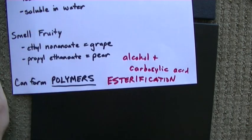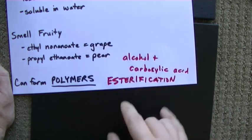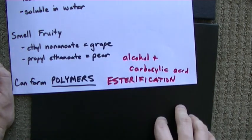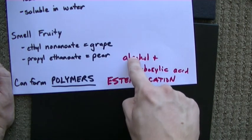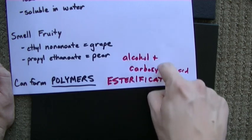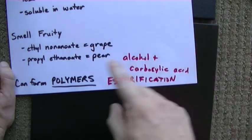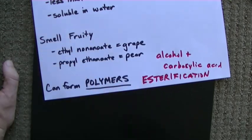And, if you have molecules that have 2 alcohol groups on them and 2 carboxylic acid groups, you can get a carboxylic acid reacting with the alcohol, that reacts with another one of these, that reacts with another one of these, and it goes on and on and on to form a huge long chain, which is what we call a polymer.